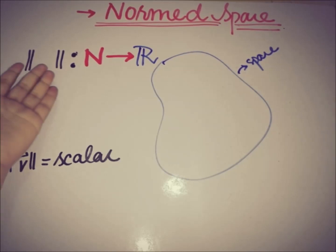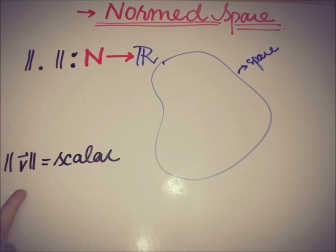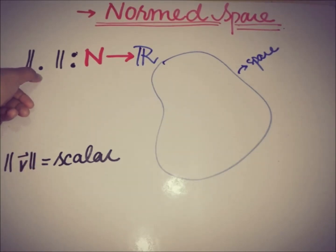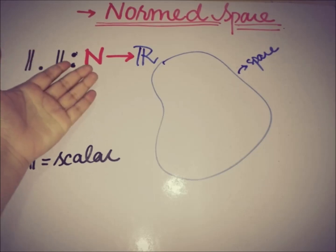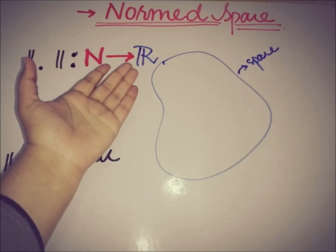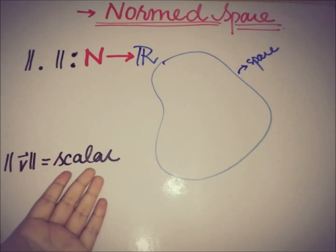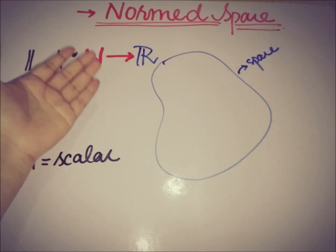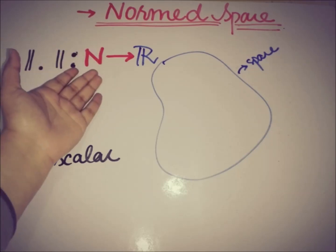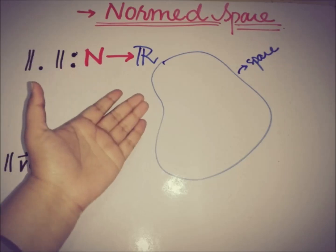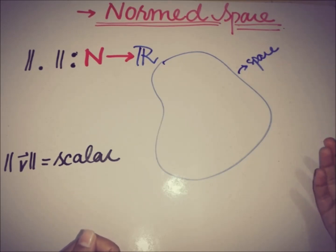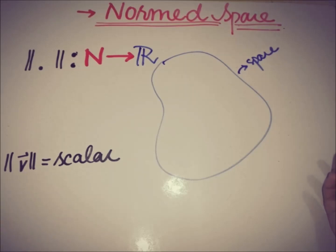Here is the representation: the function is represented by bars because the norm is represented by two bars, and the dot represents the element under consideration. N is the space and R is the scalar output. This space N is said to be a normed space if it satisfies some axioms, and a space must have an underlying field — which may be real numbers or complex numbers, depending on the nature of the input.